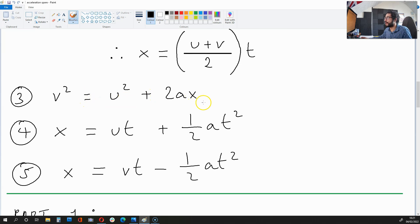You should also know that v squared is u squared plus 2ax, x is ut plus half at squared, and x is also equal to vt minus half at squared.